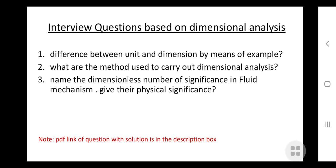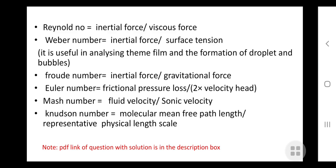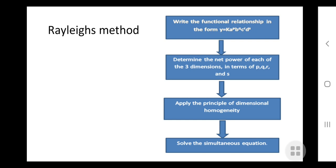Second question is: what are the methods used to carry out dimensional analysis? There are two methods. First one is Rayleigh method. Rayleigh method is based upon the fundamental principle of dimensional homogeneity of physical variables. This method gives relationships for dimensionless parameters.